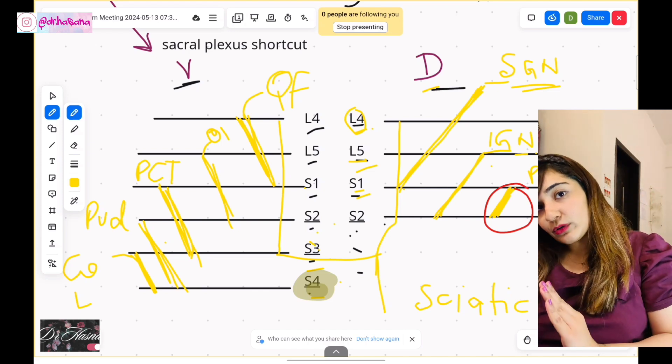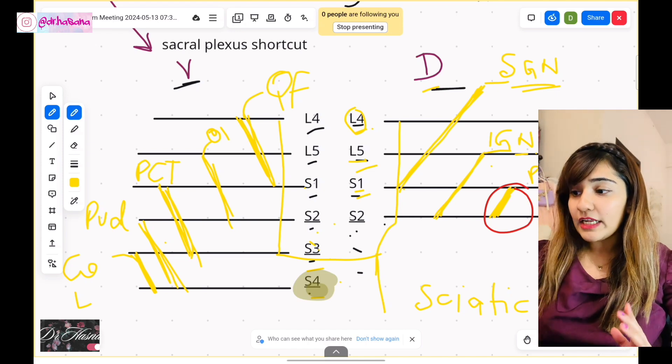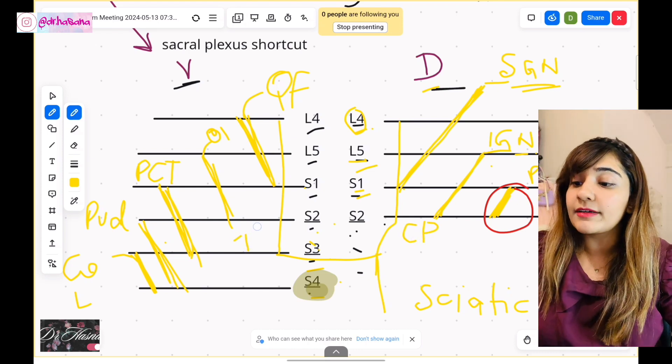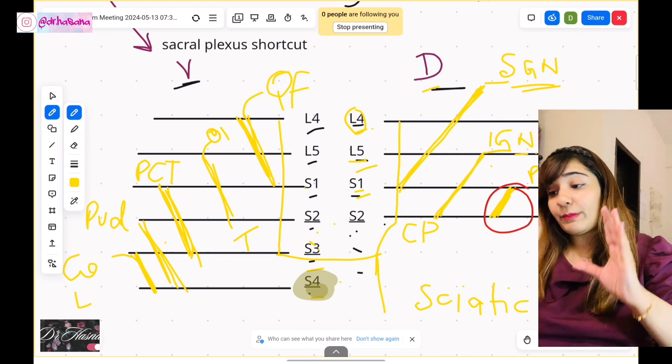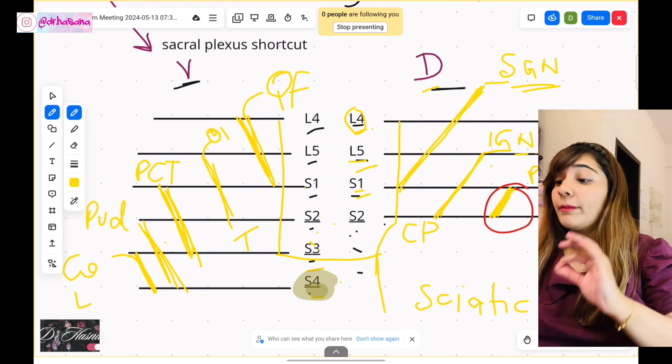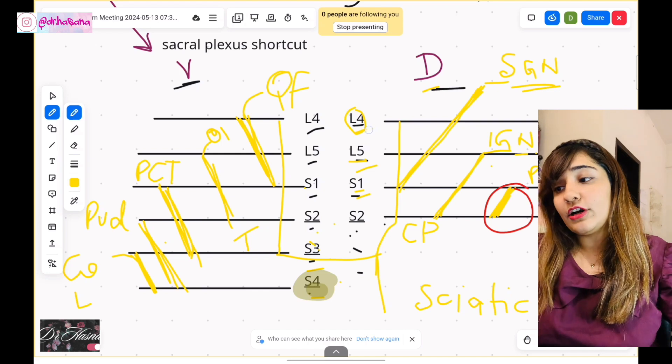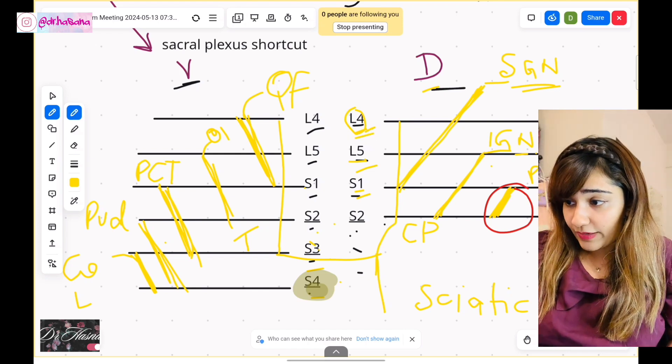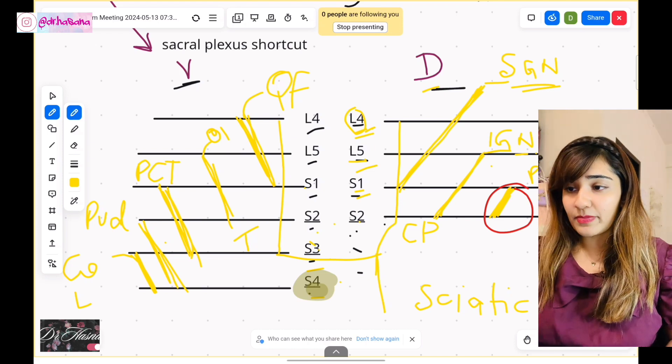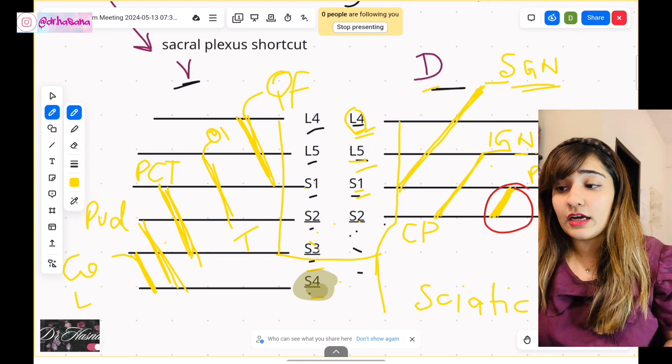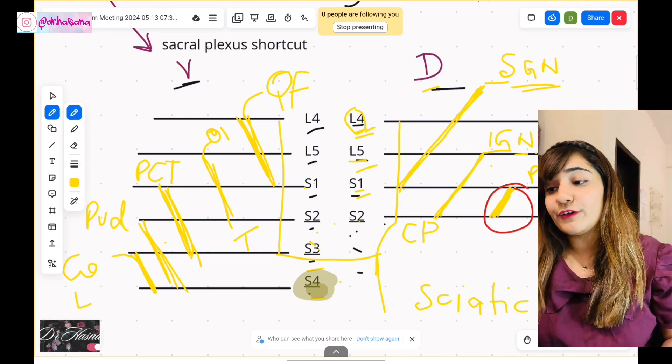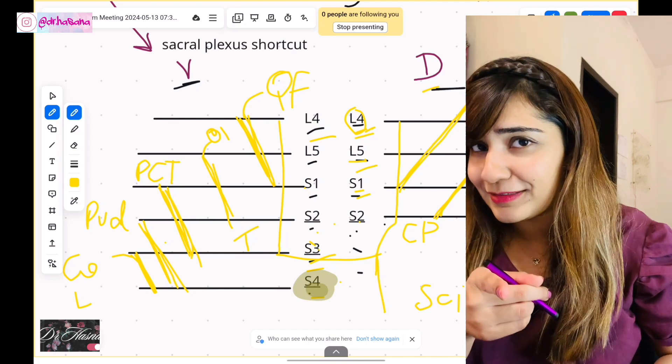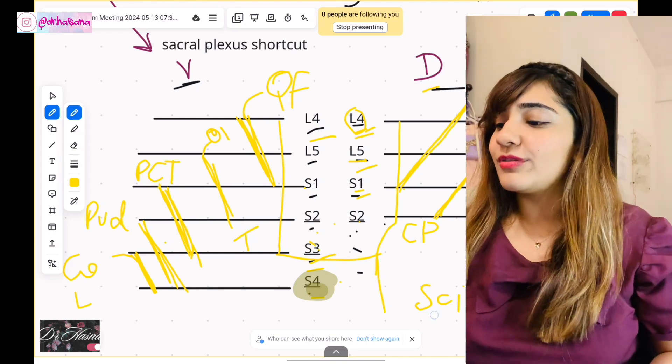The sciatic nerve is formed by a common peroneal part and a tibial part. So the common peroneal part comes from the dorsal divisions and the tibial part comes from the ventral divisions. Now remember if anybody asks you the root value of the common peroneal part of the sciatic nerve you're going to say dorsal divisions of, don't forget to say the word dorsal, dorsal division of L4 to S2, whereas the tibial part is ventral division of the L4 to S3 and guess what you nailed it, well done guys.